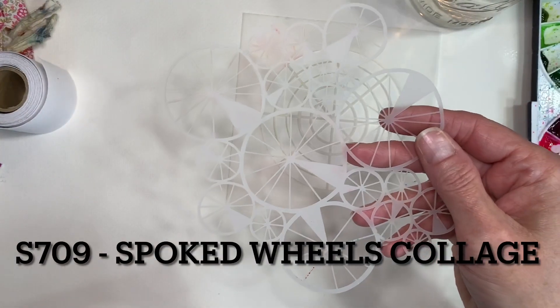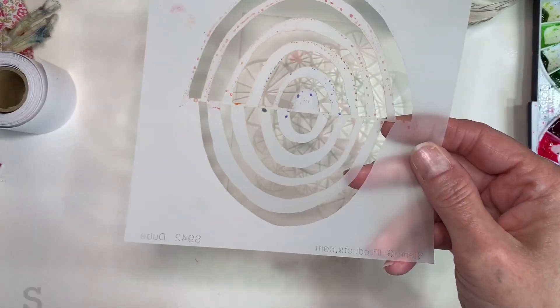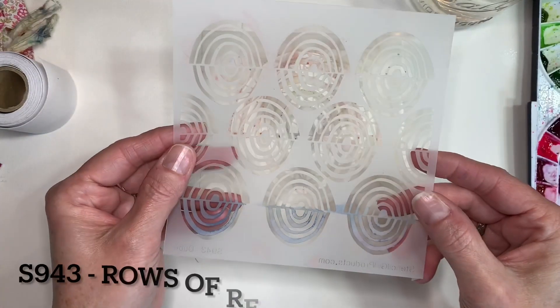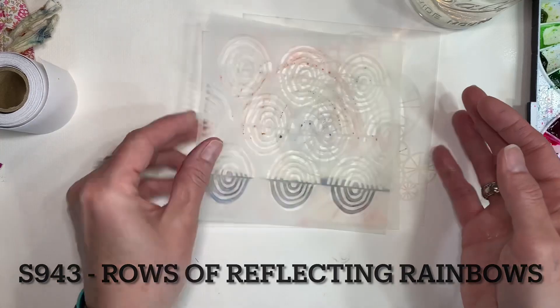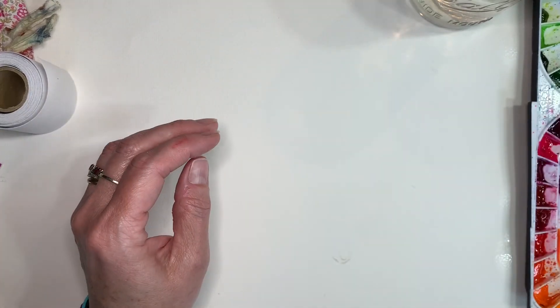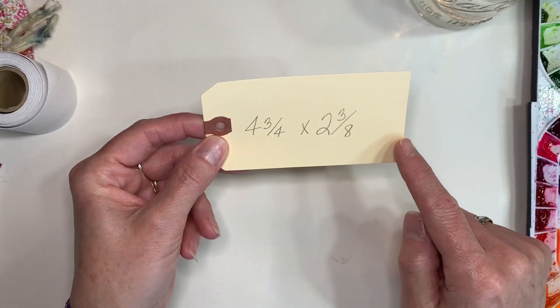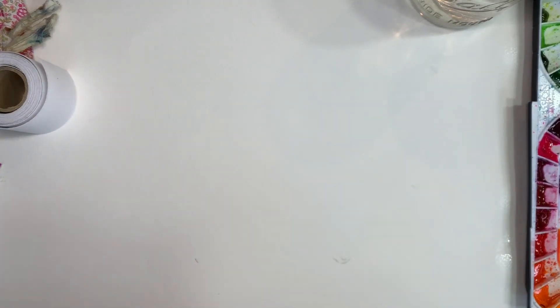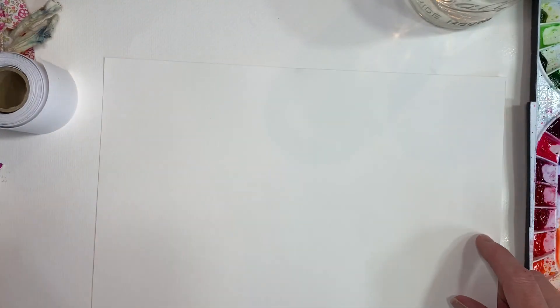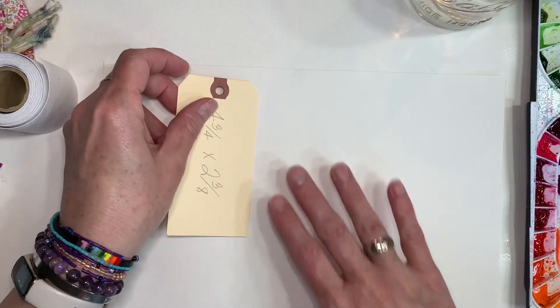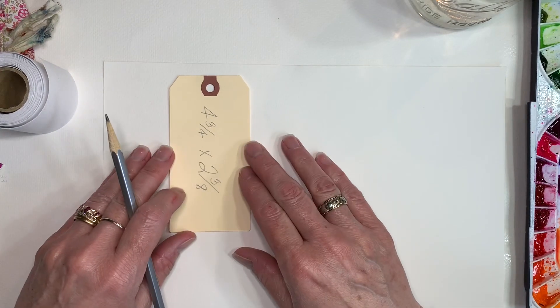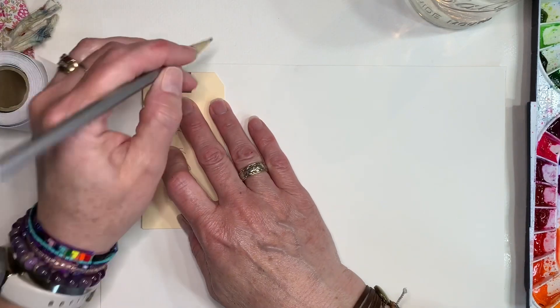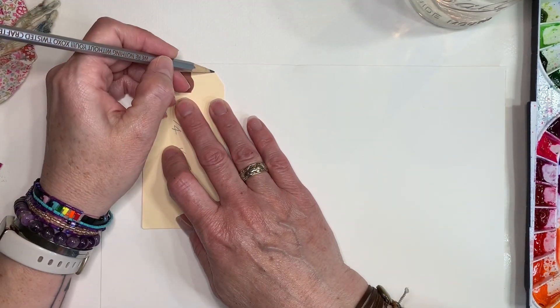Stencil Girl has a ton of rainbow stencils that really made this project easy. So the first thing that I'm actually going to do is I have gathered a tag which is four and three quarter inches by two and three eight inches. Now you don't have to use this exact tag. You can use any size tag that you want and I'm just going to go ahead and trace these onto watercolor paper. I ended up tracing six of them and only ended up using four of the tags.